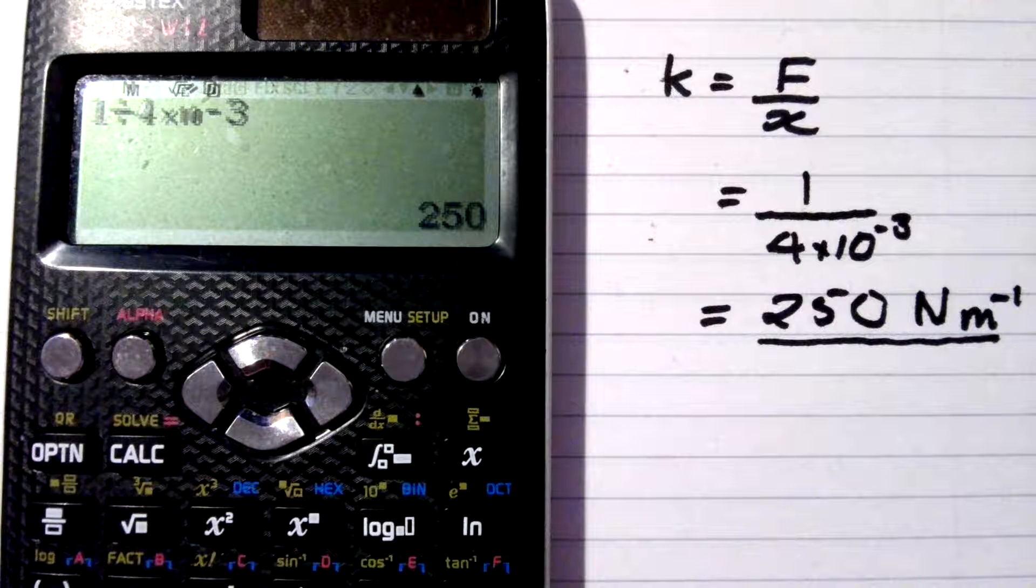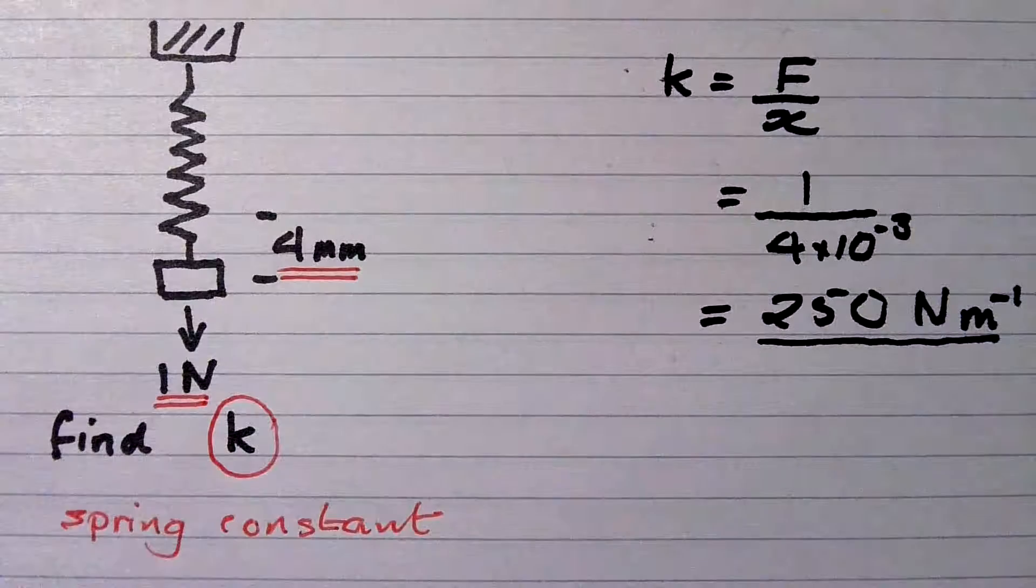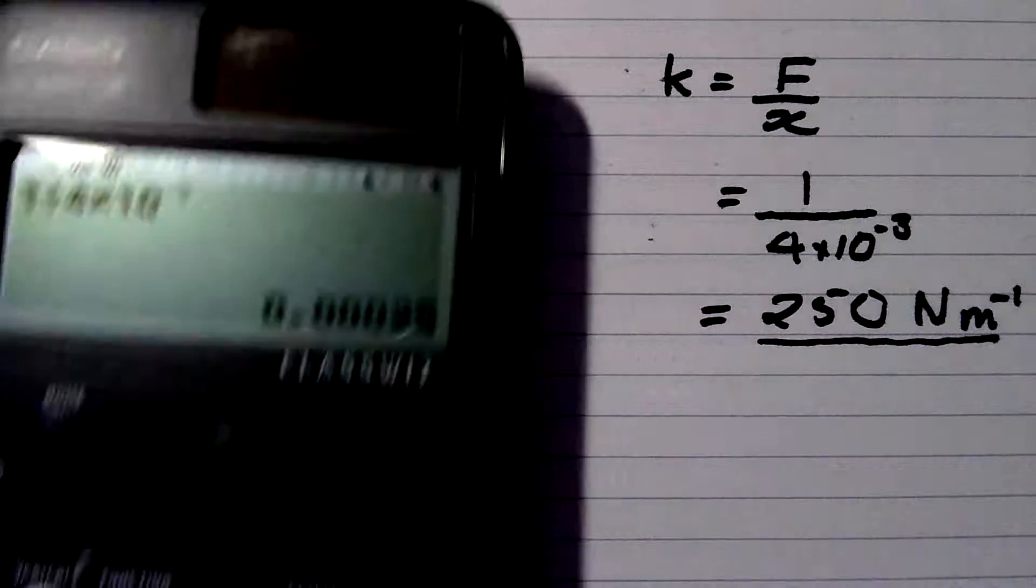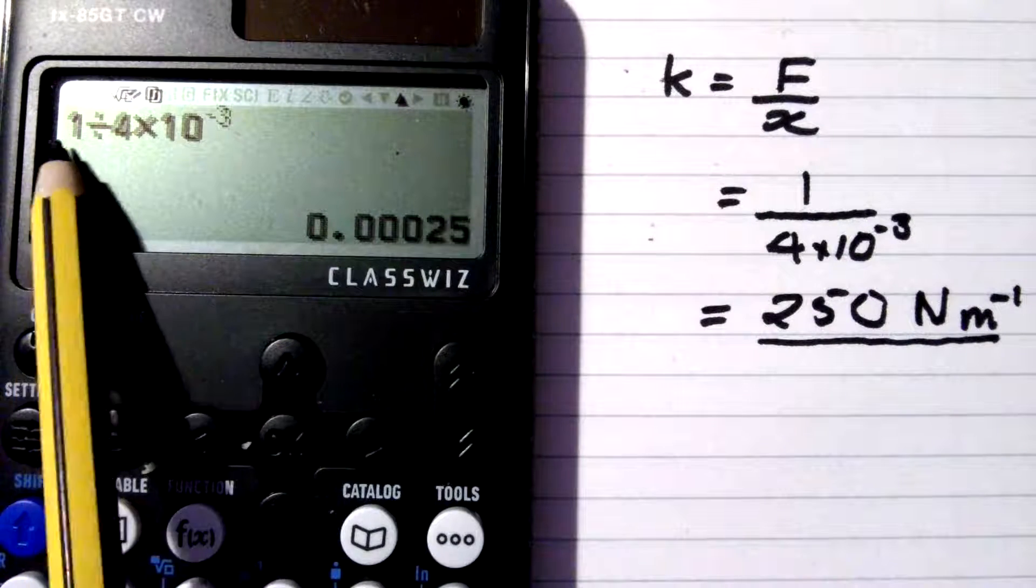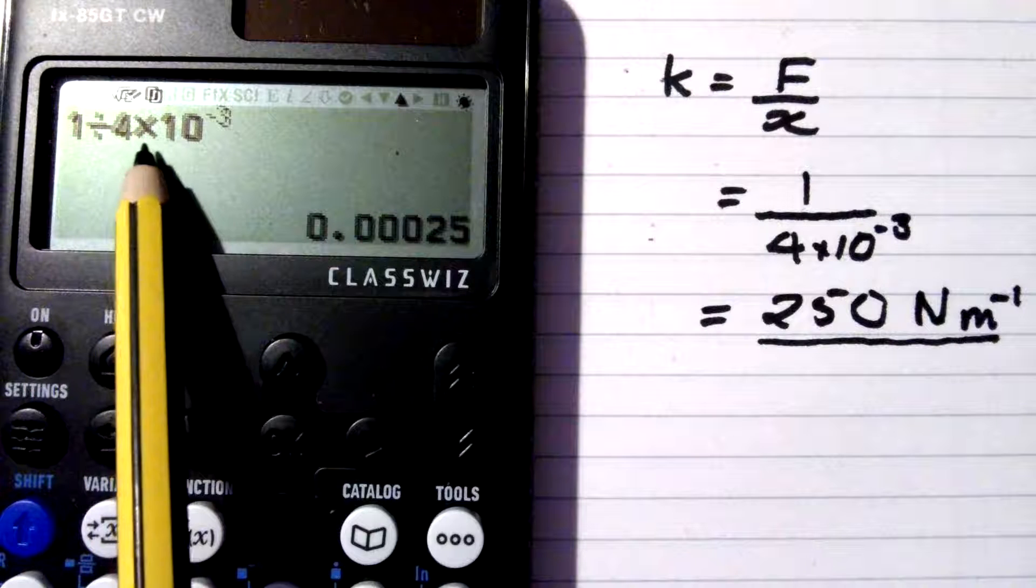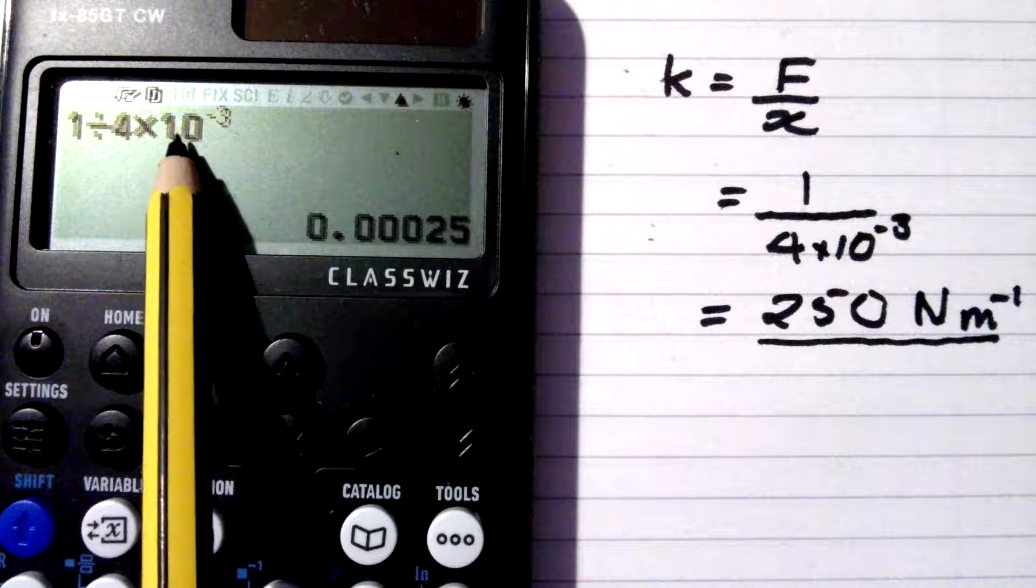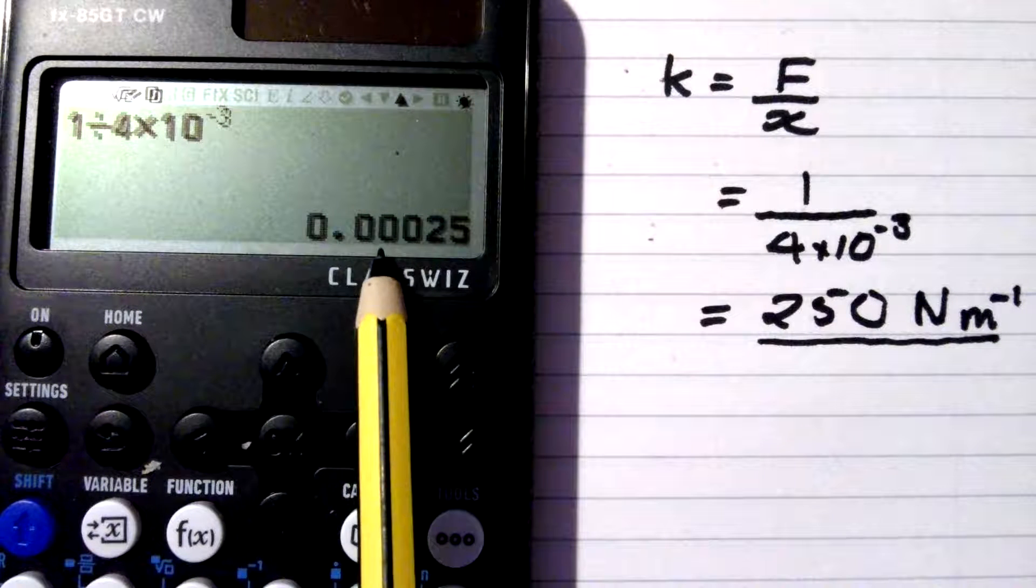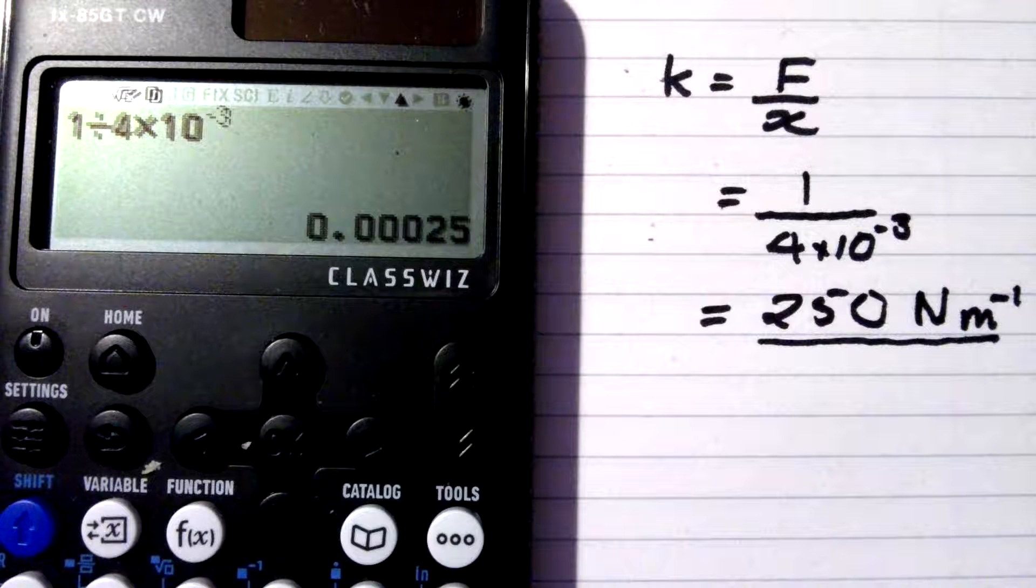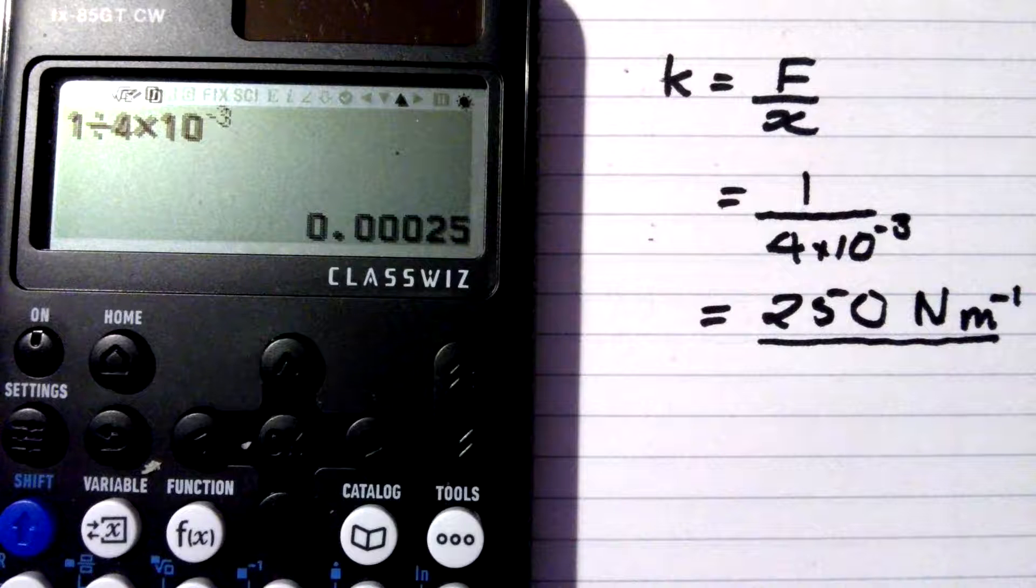Now, let's have a look at the new Casio calculator. Here it is. You can see we've got exactly the same calculation. 1 divided by 4 times 10 to the negative 3, and look at the answer it gives. It's completely wrong, and that I think is unforgivable in an up-to-date calculator.